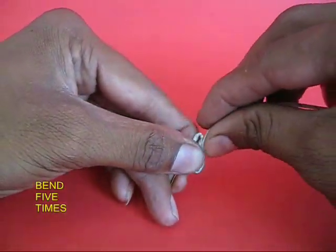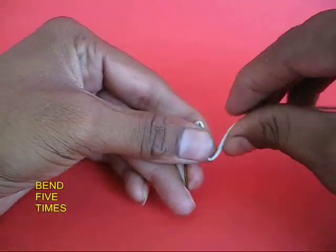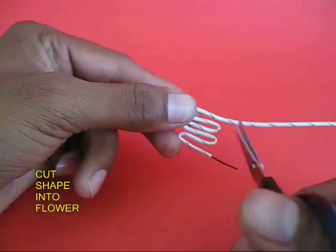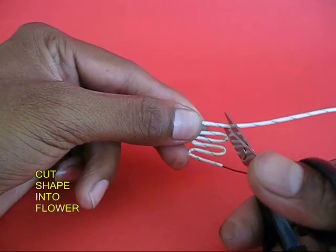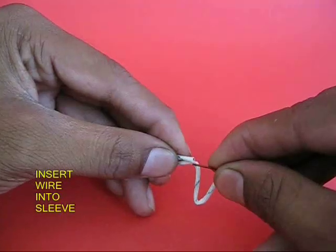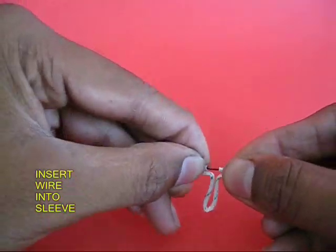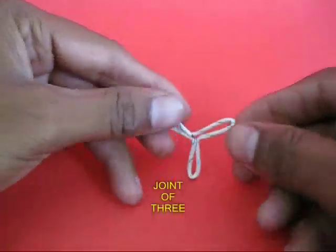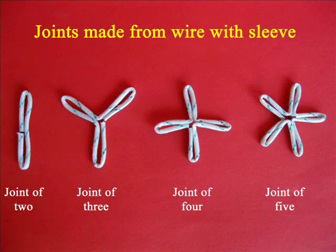Now you take a piece of wire and bend it five times, then cut it. Now you insert the wire in the last sleeve and make a three-petal flower. This is a joint of three.